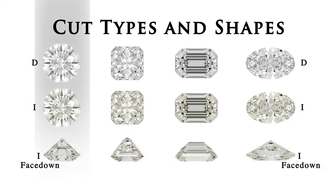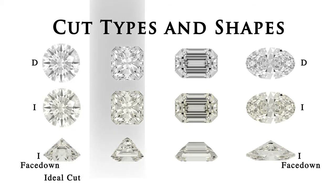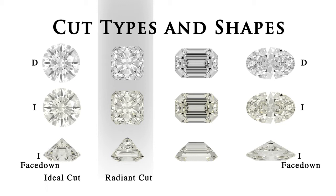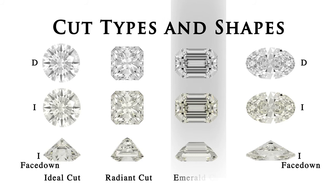You can see that the ideal cut round diamond shows the least colour face up. The radiant cut is uniform in its colour but lower than the round stone. And some parts of the emerald cut, especially in the corners, show an uneven colour.